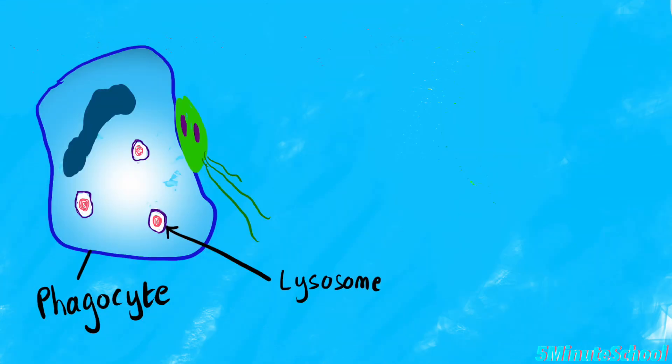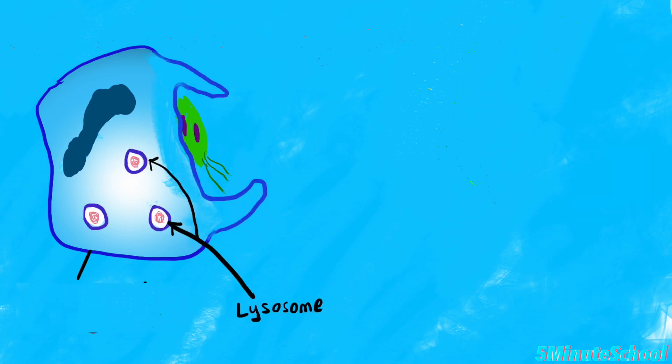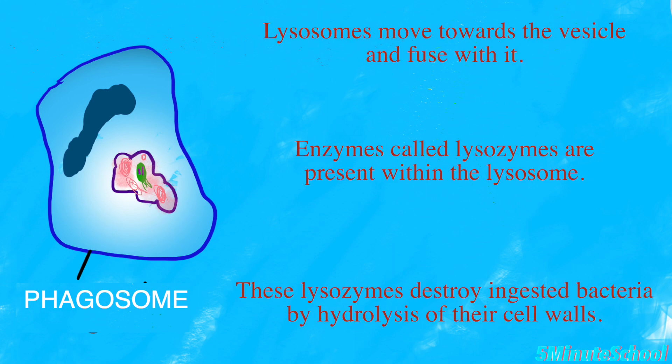They engulf the pathogen to form a vesicle known as a phagosome. Lysosomes in the phagocyte move towards the vesicle and fuse with it. Enzymes called lysozymes are present within the lysosome, and these lysozymes destroy ingested bacteria by the hydrolysis of their cell walls.